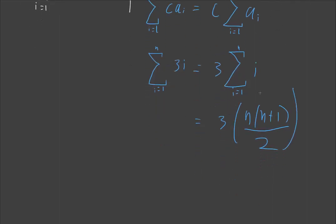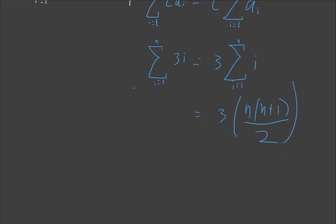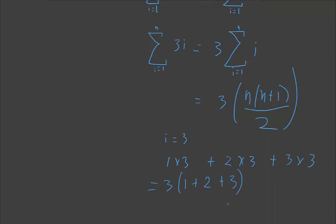And this rule kind of makes perfect sense if you think about what it's actually doing. So in this case 3 times i, let's say i equals 3. In the first iteration this is going to expand out to 1 times 3 plus 2 times 3 plus 3 times 3. That's kind of what this notation is going to look like if we actually expand it out. And just using the rules of factoring, what we can do is take the 3 out the front and those two are the same.